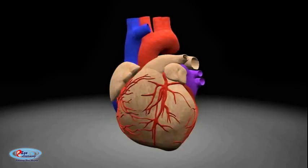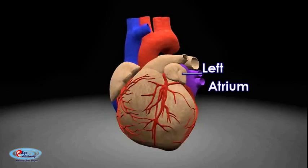The left atrium is one of four chambers in the human heart. It receives oxygenated blood from the pulmonary veins and pumps it into the left ventricle via the mitral valve. The atrium facilitates circulation primarily by allowing uninterrupted venous flow to the heart, preventing the inertia of interrupted venous flow that would otherwise occur at each ventricular systole.